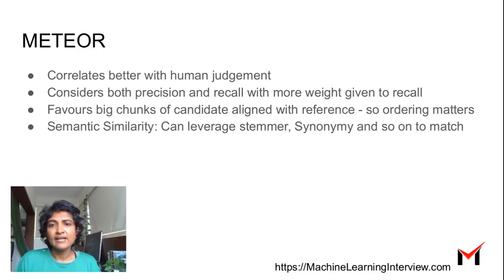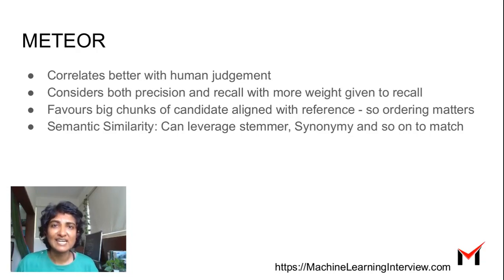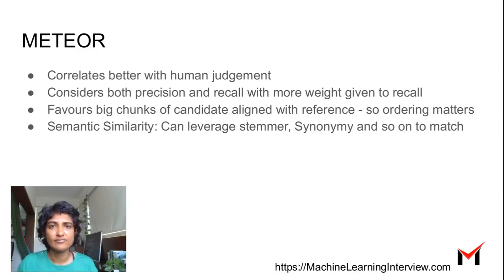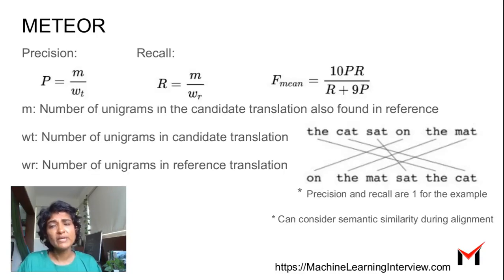METEOR also favors matching big chunks of text in the reference. For example, if the candidate is 'the cat is on the mat' and the reference is exactly 'the cat is on the mat,' that should score better than 'the on is mat cat the,' which has the same words but is grammatically wrong. METEOR gives higher weightage when there is an exact contiguous match.